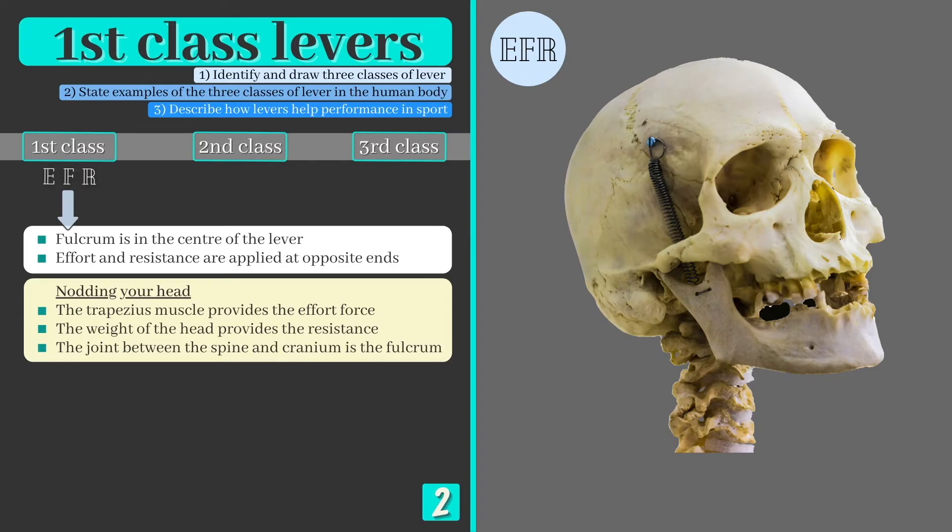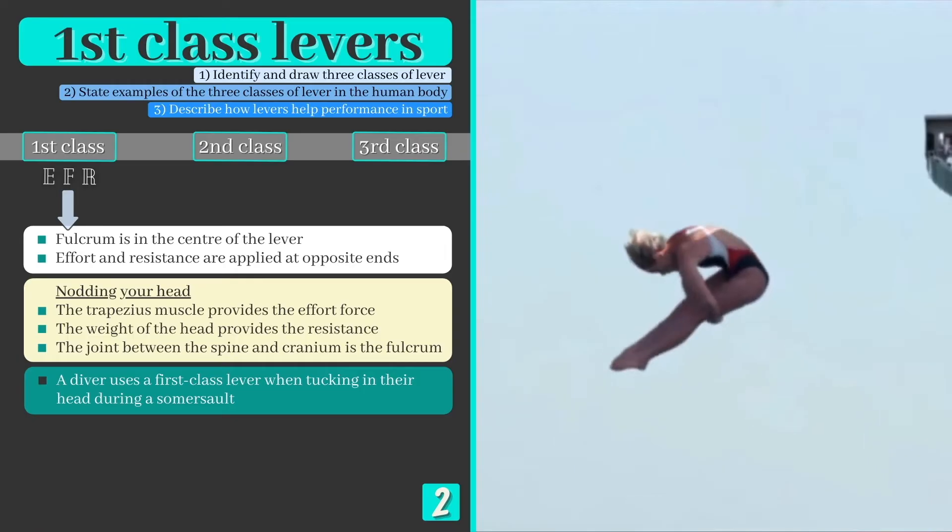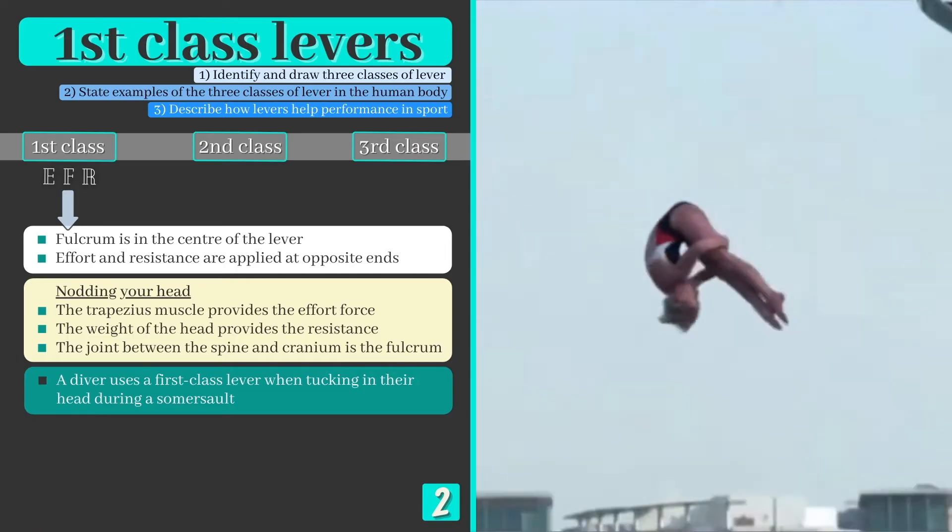Nodding your head is a great example of a first class lever in action. The joint that is formed as the spine meets the base of the cranium is the fulcrum. The resistance force comes from the weight of the head and is directed downwards due to gravity, while the trapezius muscle pulls on the back of the skull, providing the effort force needed to oppose the resistance. In diving, this first class lever is used to tuck the head into the chest when performing a somersault.